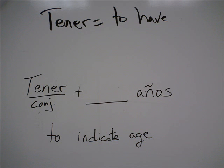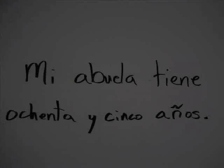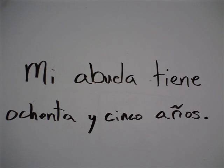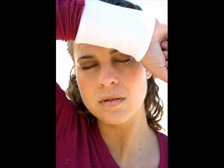Tener is also used to indicate age. You conjugate tener, add how many years, and then say años. For example: mi abuela tiene ochenta y cinco años — my grandmother is 85 years old.